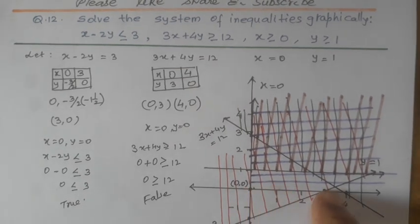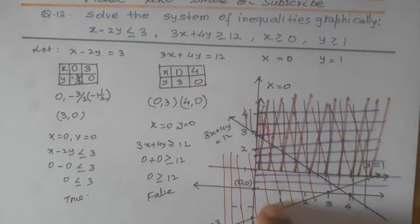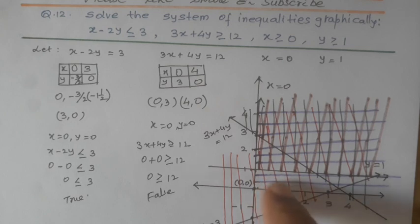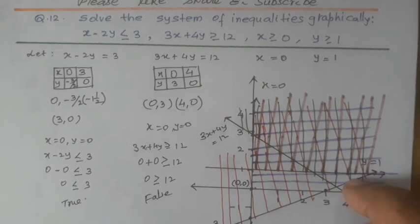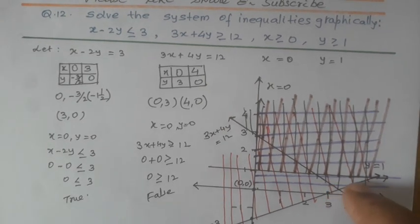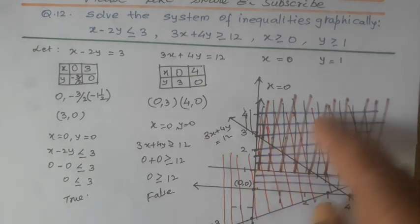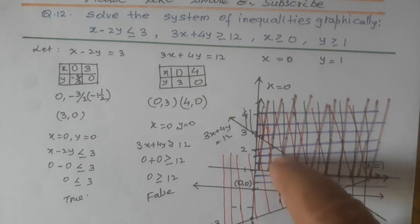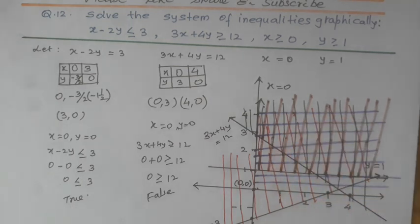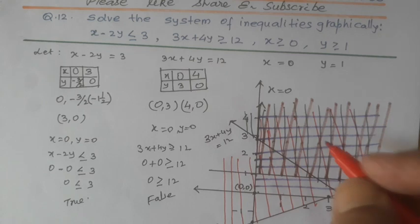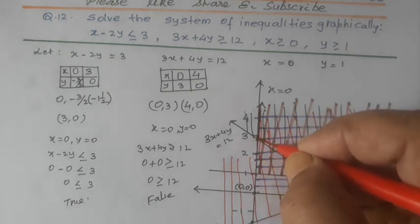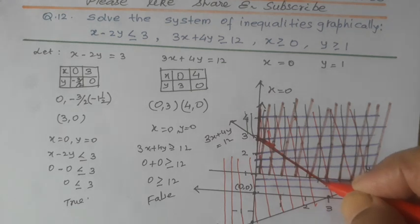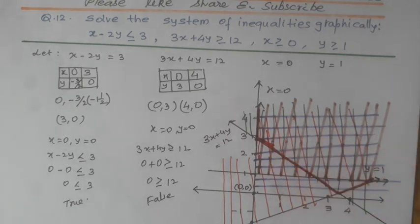We find that in this area, only red line is there. In this area, red and violet lines are there. In this area, red, violet and green lines, three are there. But in this area, all four lines are there. All four inequalities are representing this common area. So, this common area will be represented by it.